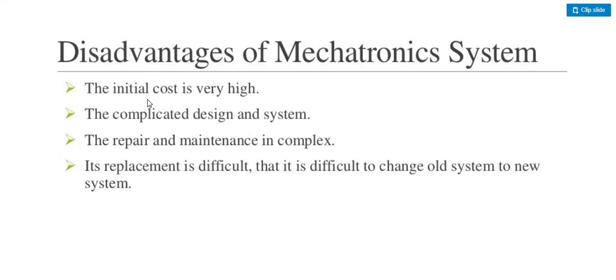The drawbacks of the mechatronics system: the initial cost is very high. For example, when you design an ATM machine, initial cost is more, but after that, maintenance cost is low. However, initially the cost is high. Other drawbacks include complicated design and systems, repair and maintenance is complex, replacement is difficult, and it is difficult to change the whole system to a new system. These are the drawbacks and disadvantages of the mechatronics system.